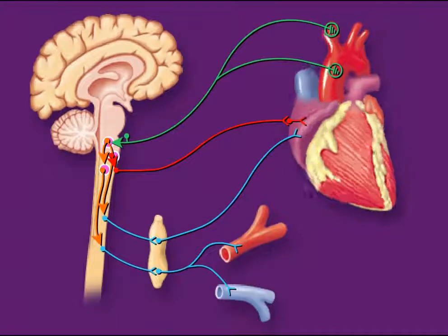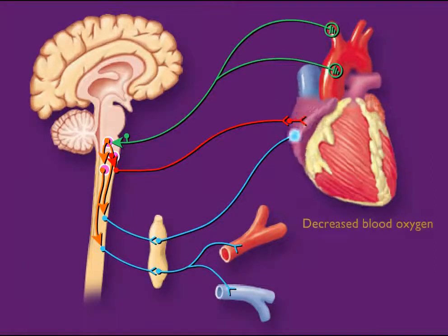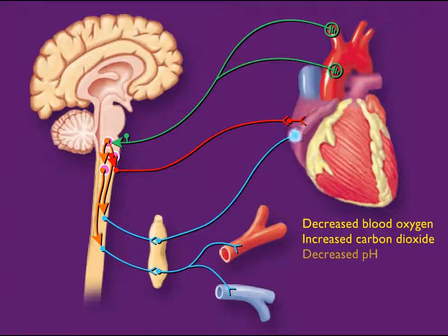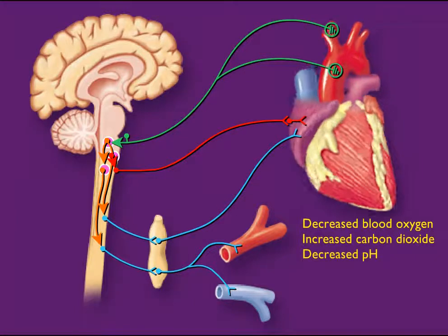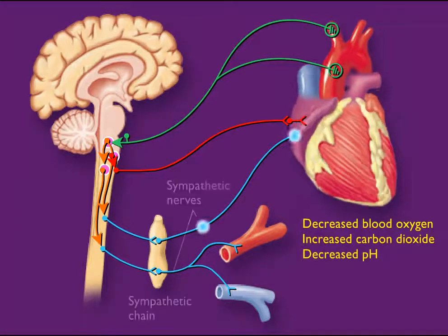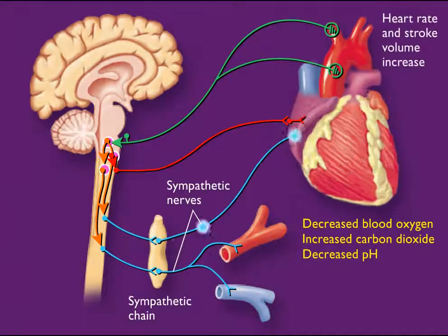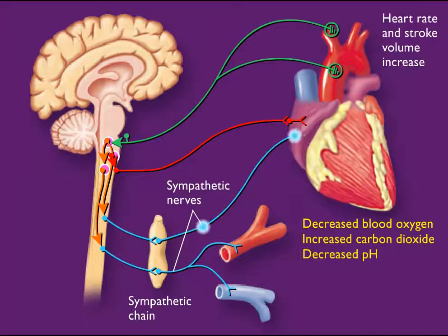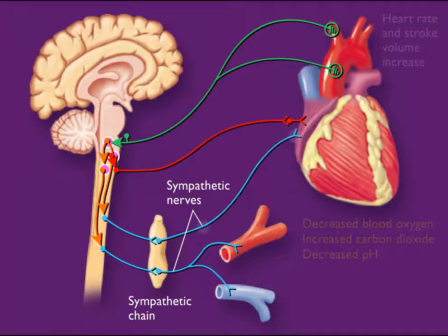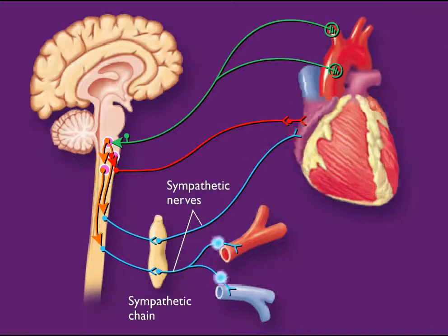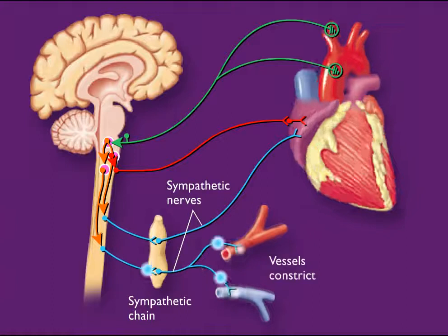Decreased blood oxygen, increased carbon dioxide, and decreased pH increase sympathetic stimulation of the heart, which increases heart rate and stroke volume. Increased sympathetic stimulation of blood vessels increases vasoconstriction.